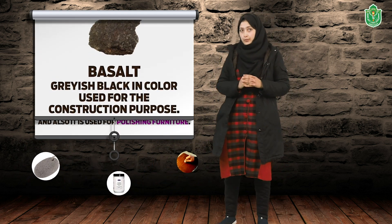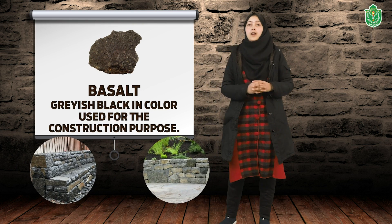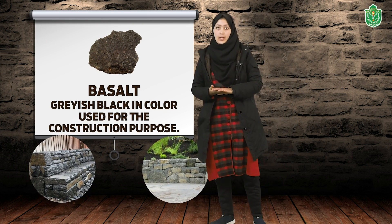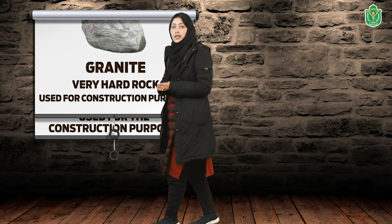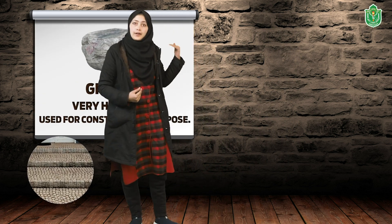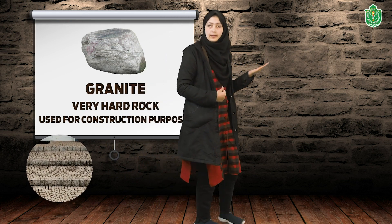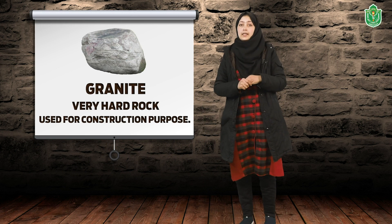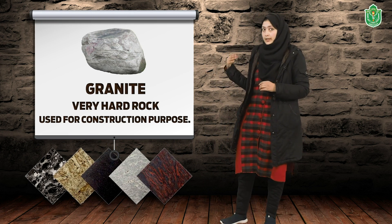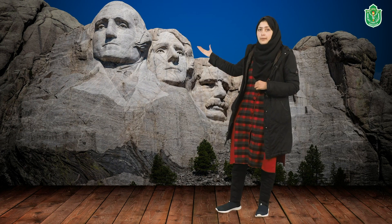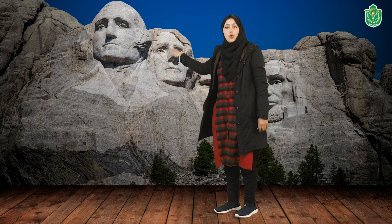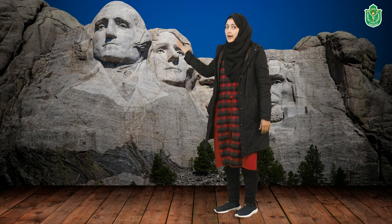Basalt is mainly popular for construction purposes and is usually grayish-black in color. Granite is a very hard rock mainly used for construction purposes. As you can see, granite comes in different colors and can be used in constructing monuments and buildings. The very famous Mount Rushmore monument is made up of granite rocks.